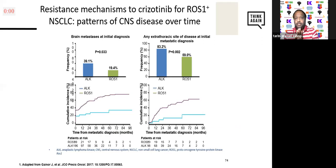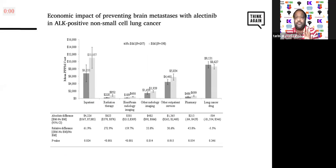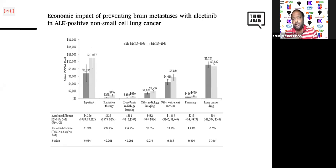Looking at CNS resistance patterns: ROS1 is one group where the cumulative effect of CNS disease over time is not as good as EGFR mutated or ALK positive patients. Regarding cost-effectiveness: alectinib may be costly as a drug, but if you develop CNS disease on crizotinib, your other expenses go up, survival deteriorates, and economically choosing alectinib — a more effective drug — has been found to be much better overall.